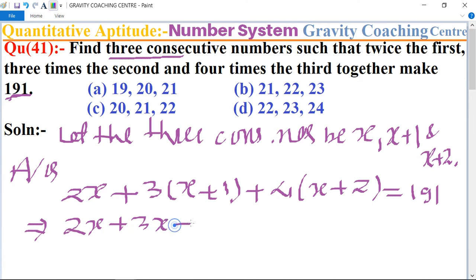This implies that 9x plus 11 equals 191.